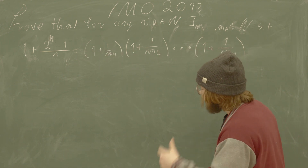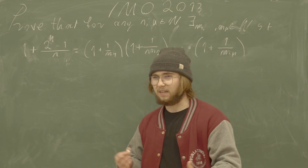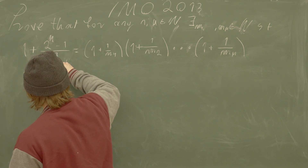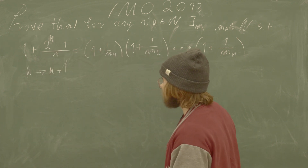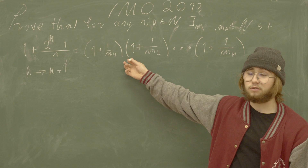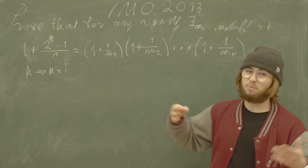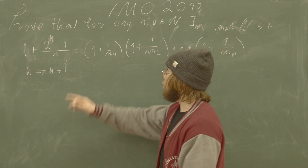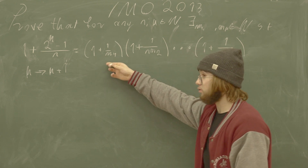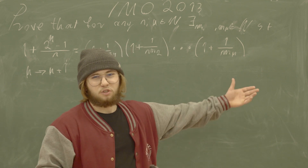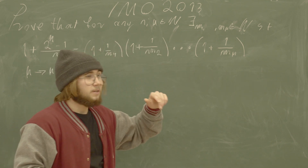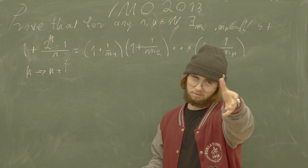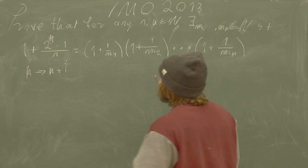Now for the induction step: proving that the statement holding for k will imply the statement holding for k plus one. For that, I will assume the statement for k — that is, there exists a particular natural number k such that for any natural number n, one plus two to the power of k minus one over n equals this product, and we can choose those m's such that it equals this product. After setting k equal to k plus one, how is my problem going to look?